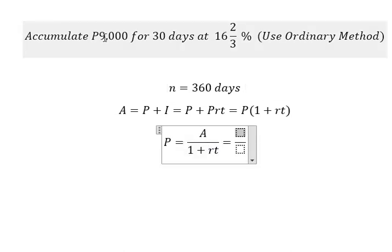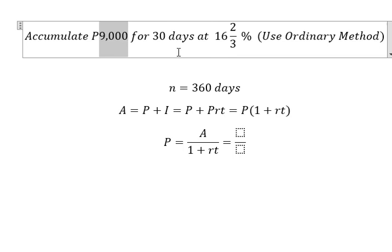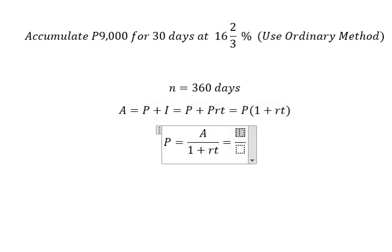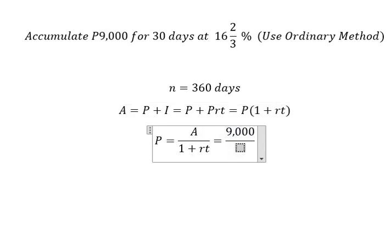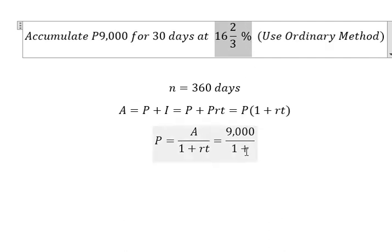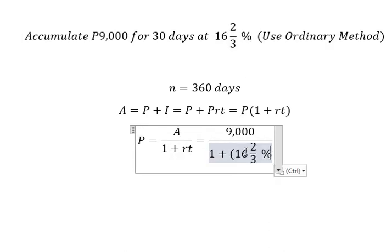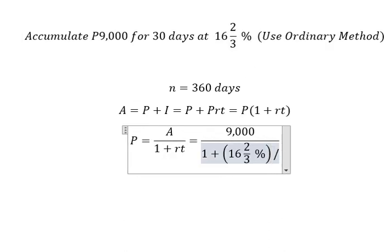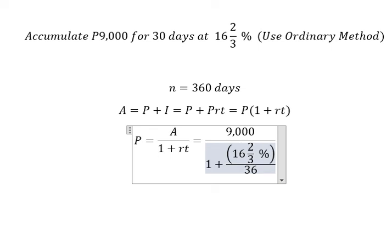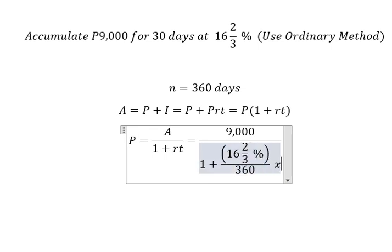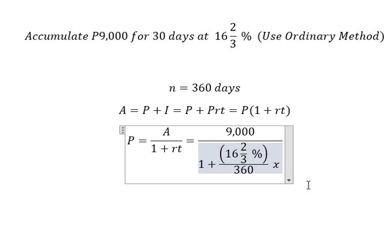So accumulation we have 9,000 we put in here. Interest rate we have this one, we divide by 360 days, then we multiply by 30 days.